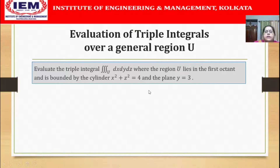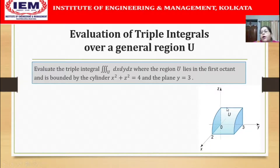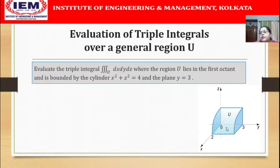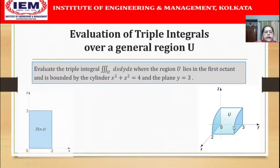Drawing the region: we are in the first octant, bounded by the portion of the cylinder x² + z² = 4 in the first octant — which is a quarter circle of radius 2 on the xz-plane — and bounded on the other side by the plane y = 3. The projection of this region on the xy plane is a rectangle where x varies from 0 to 2 and y varies from 0 to 3.